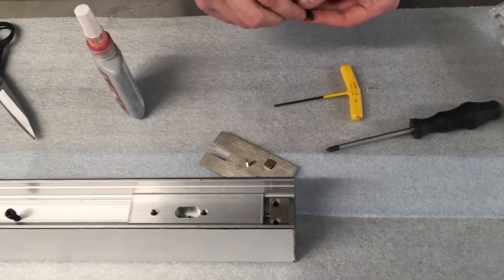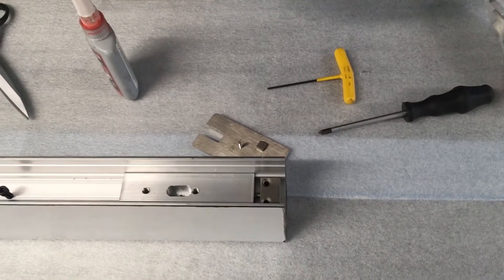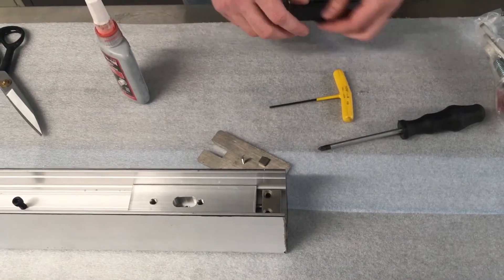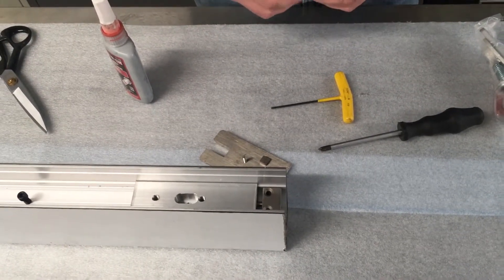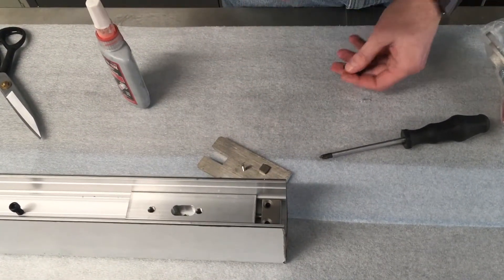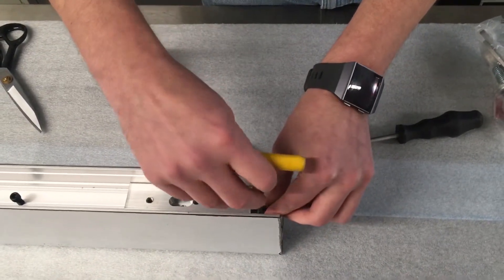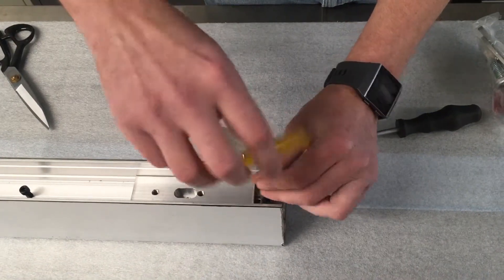Mounting the adjuster block into the door rail, use number 8-32 fasteners and apply threadlocker to each fastener when installing. Use a 3/32 Allen key to tighten it down.